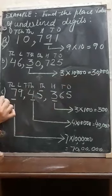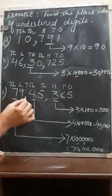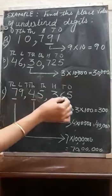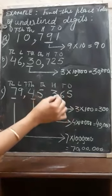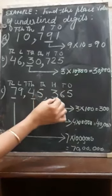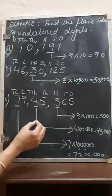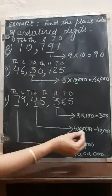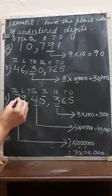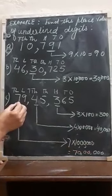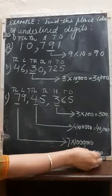In part C, the numeral is 79,45,365. Here three digits are underlined. The first is at the hundreds place — place value of 3 is 3 multiplied by 100, which gives 300. The next is showing 40,000. Then the digit 7 is at the ten-lakhs place — 7 multiplied by 10 lakhs gives 70 lakhs.